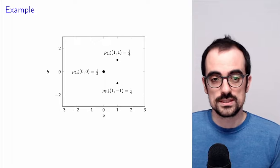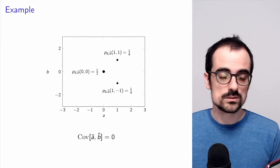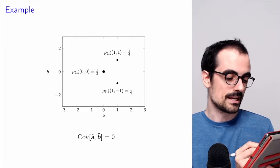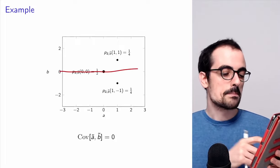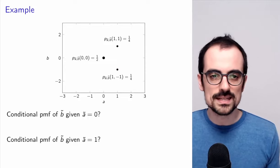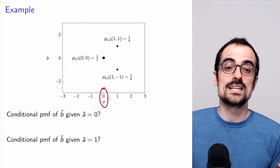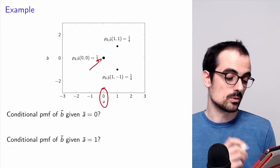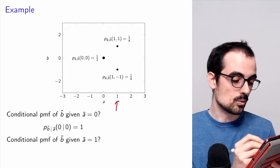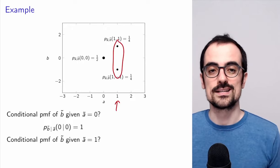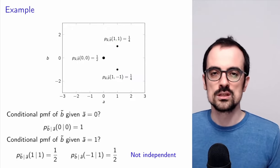The opposite is not true. Here is a simple example of two random variables where the covariance is zero: if you try to estimate B from A, the best you can do is a horizontal line — zero covariance. But clearly they are not independent, because if A equals zero, B equals zero with probability one, while if A equals one, B equals either one or minus one with equal probability. The conditional distribution completely changes, so the variables are dependent despite having zero covariance.